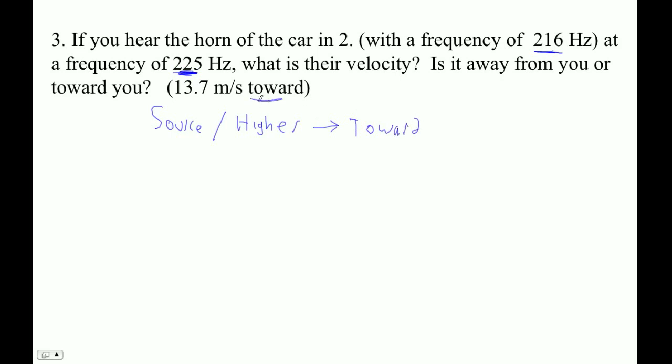All right, so that's the first part - we know it's moving toward. Now let's figure out how to get that number. The formula for moving source is f' = f(v/(v ± us)). In this case, since it's a higher frequency, we use the minus to make the denominator smaller to make the answer bigger.